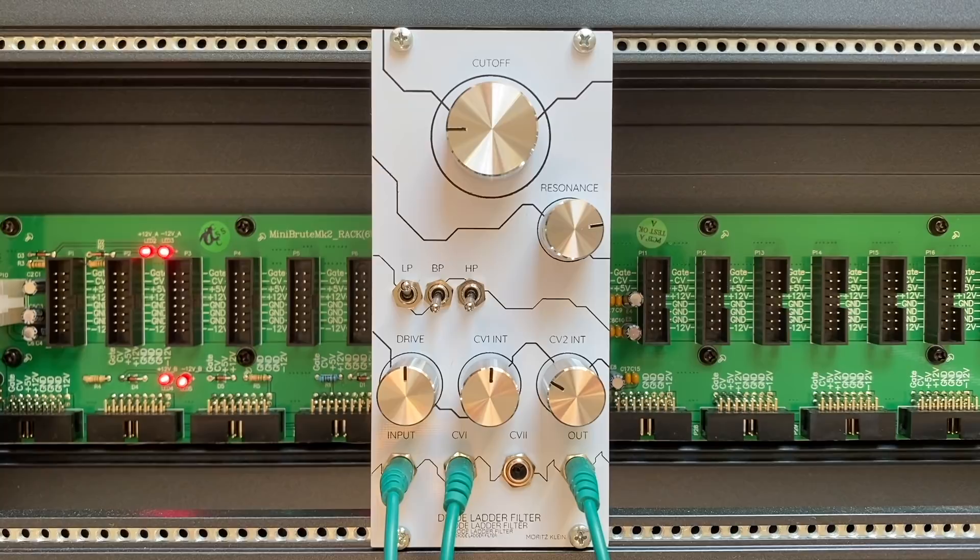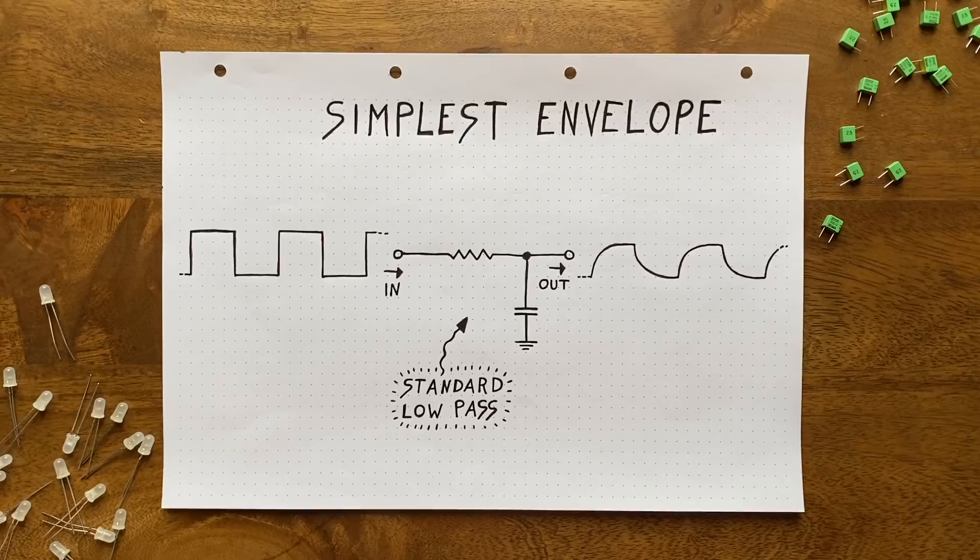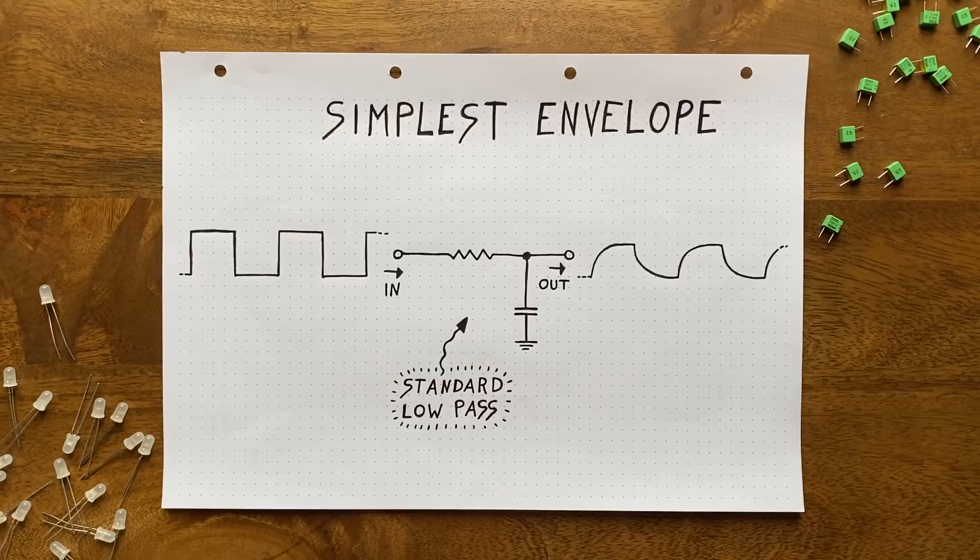And yeah, the filter movement is much less abrupt. We've got a slower attack and an extended release as planned. But what if we want to adjust the effect? Well, we've essentially got two options here. We could change either the capacitor or resistor value. But because switching components is not the most user-friendly strategy, I'm going to replace the fixed resistor with a potentiometer.